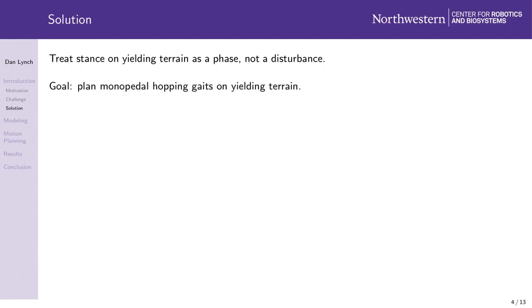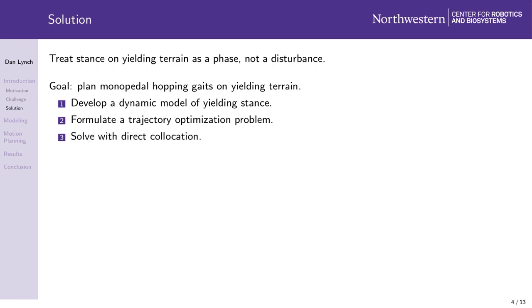In particular, we want to see if this approach can be used to plan monopedal hopping gaits on yielding terrain. To find out, first we'll develop a model of stance on yielding terrain, which I'll call yielding stance from now on. Then we'll formulate our search for hopping gaits as a trajectory optimization problem, which we'll solve using direct collocation. If we can do this, then we can use this framework to ask questions about locomotion trends, for example how gaits change with ground stiffness or with hopping speed.